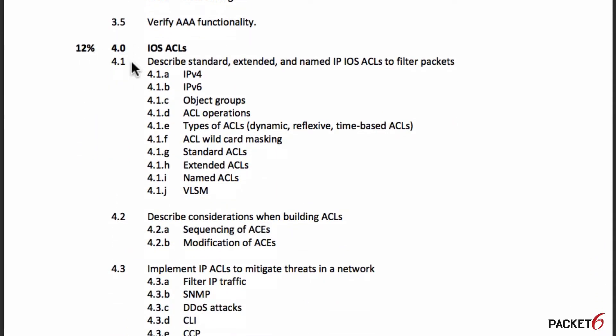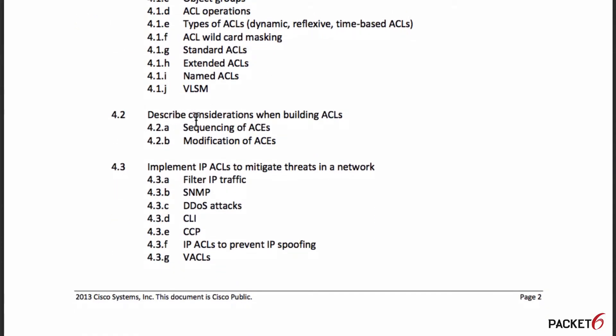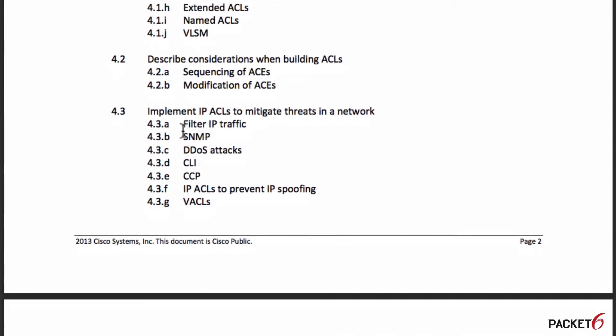Objective 4.0 is IOS ACLs (access control lists) and covers about 12% of the exam. You need to describe standard, extended, and named IP IOS ACLs to filter packets. You'll need to describe considerations when building ACLs, describe the sequencing and modifications of access control entries — what happens when a device processes a sequence of ACEs and what happens when you modify a single entry. You'll also need to implement these ACLs using CLI and CCP.